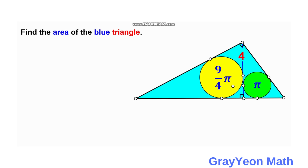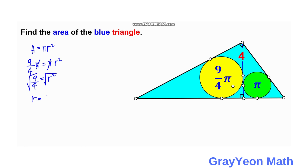For the yellow circle, the area formula is πr². So area = 9π/4 = πr². We cancel π and r² = 9/4. Taking the square root of both sides, r_y = 3/2.